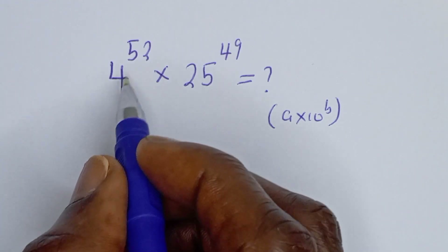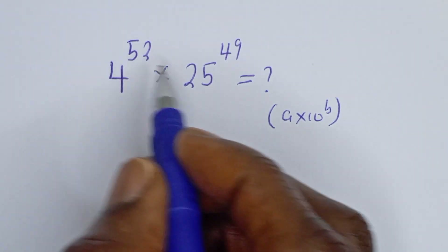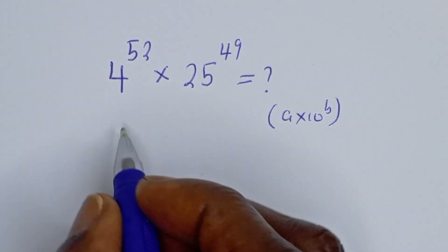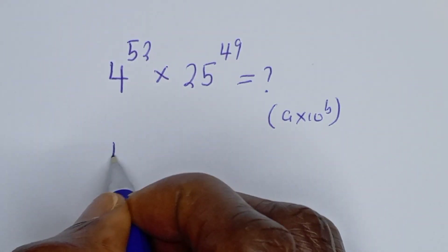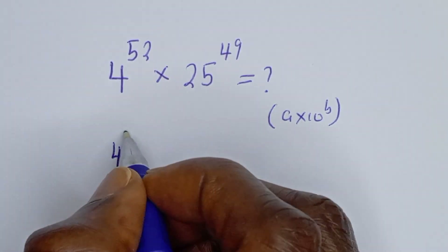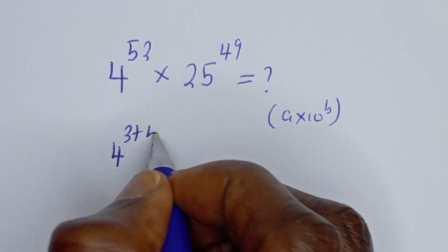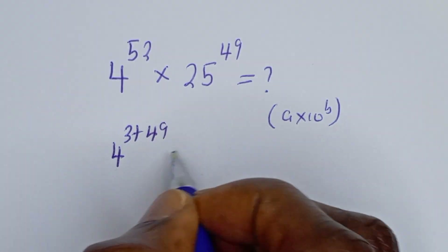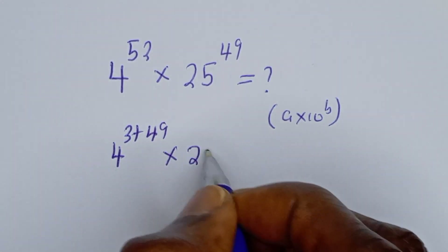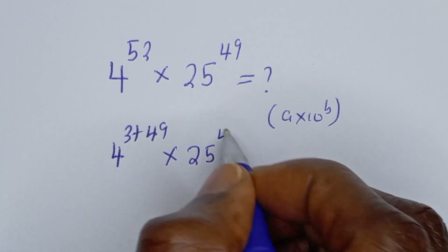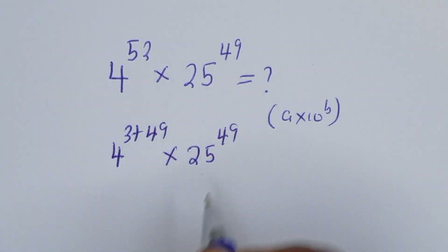Then 4 to the power of 52 can be written as 4 to the power of 3 plus 49, multiplied by 25 to the power of 49.